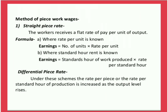Methods of Piece Rate System, also known as Methods of Piece Work Wages. First Method: Straight Piece Rate. Under this method, workers are paid wages at a fixed amount per unit of product manufactured, irrespective of the time taken to produce it. The Piece Rate wages under this method is very simple — the worker receives a flat rate of pay per unit of output.